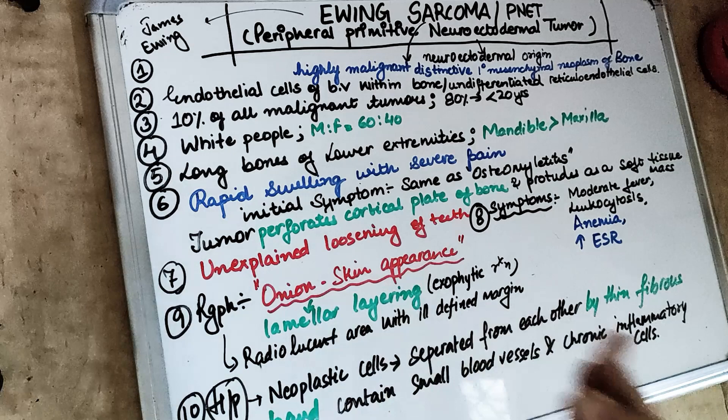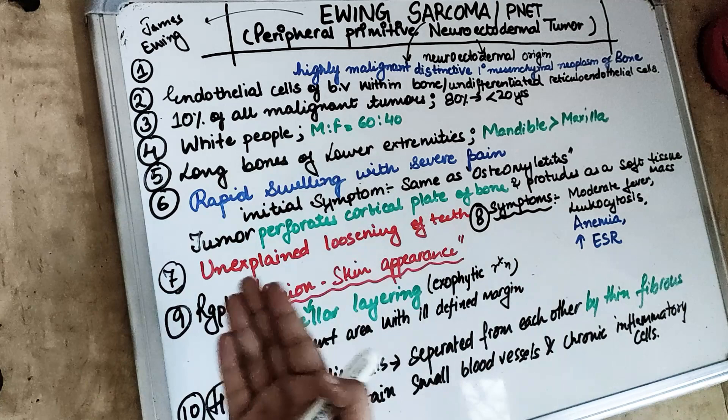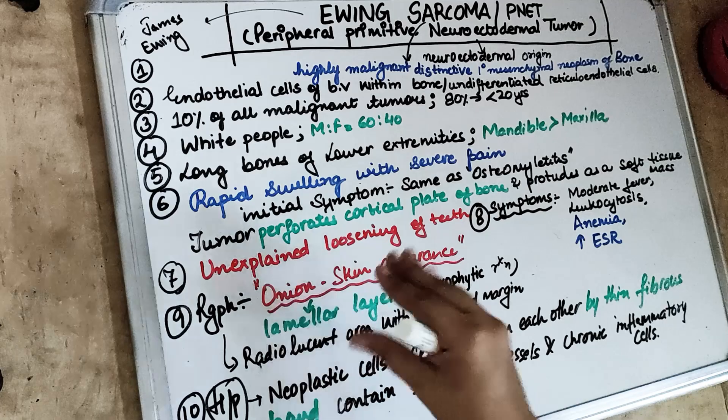Ewing Sarcoma is the third most common primary malignant neoplasm of the bone. It is named after James Ewing, who first described it. It is derived from the endothelial cells of the blood vessels present in the bone.